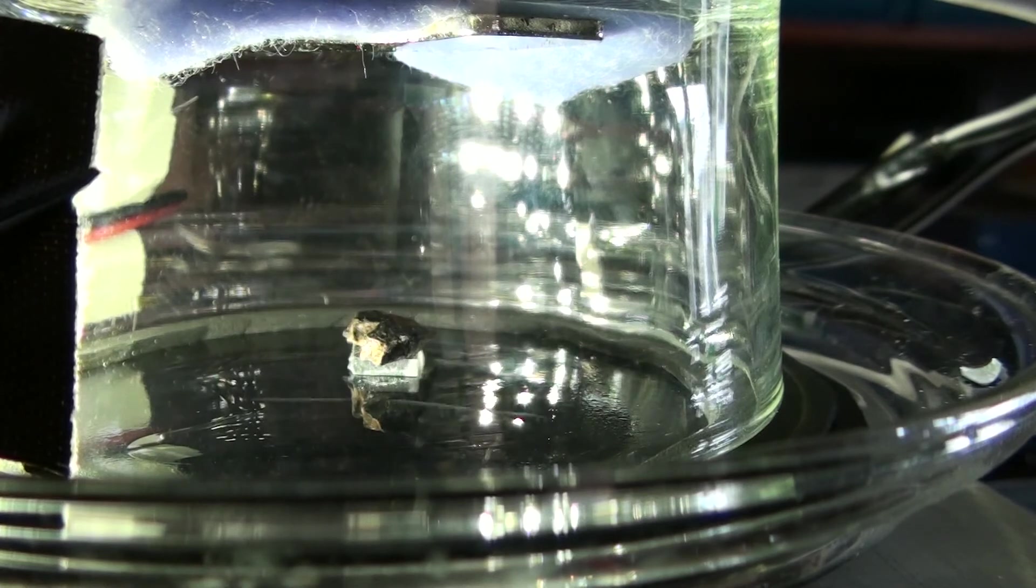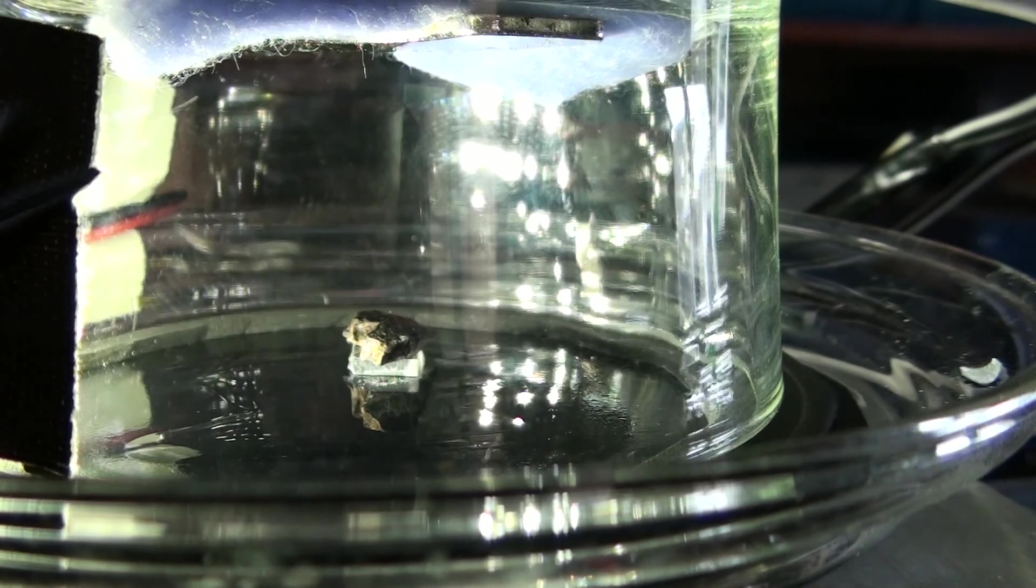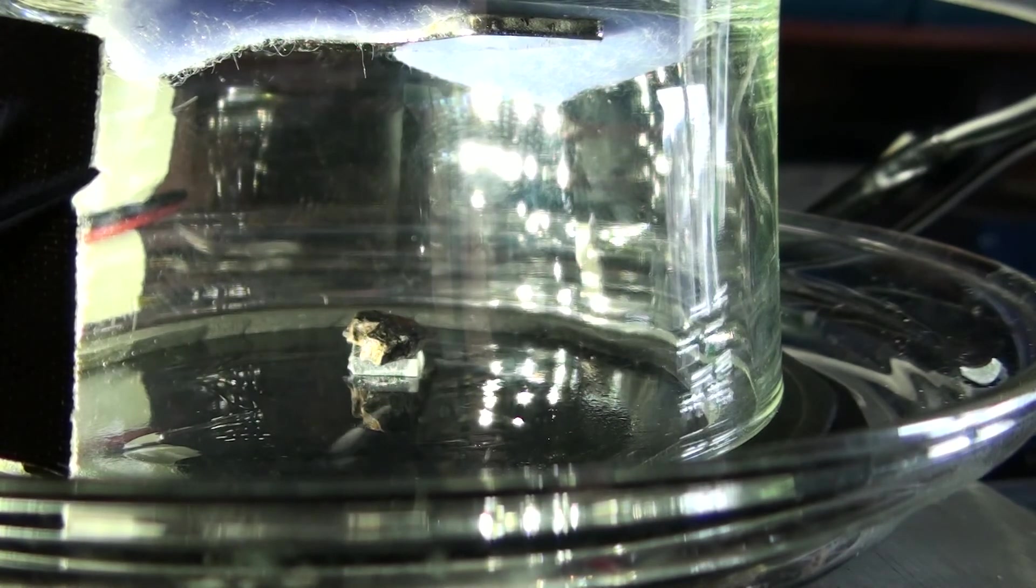Very interesting fact is that the positron actually was discovered with a cloud chamber. So we got our first proof of antimatter actually existing because of one of those. And in general it's a great project, it's one of the coolest things I think I ever built. And I really only can suggest everybody to try it.